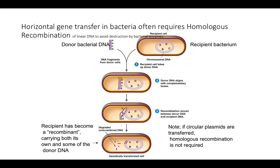Another way bacteria can increase genetic diversity is through horizontal gene transfer. If a linear piece of donor DNA gets introduced into recipient bacteria, it will be destroyed by bacterial enzymes that treat it as possible phage DNA. For linear donor DNA to survive, it has to get inserted into the recipient's chromosome, very often through the amazing process of homologous recombination, where donor DNA ends up replacing some of the recipient's DNA.